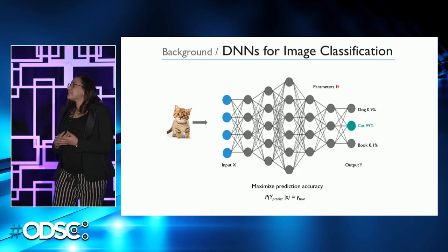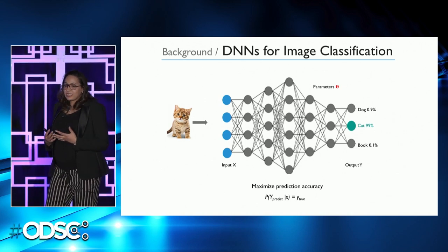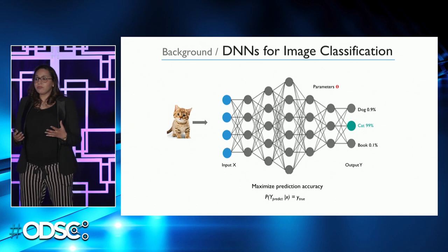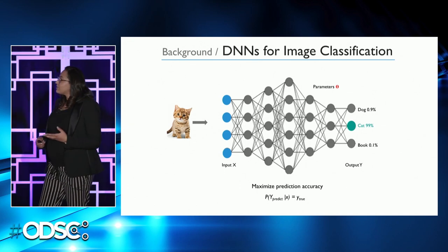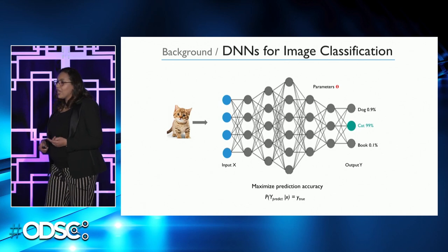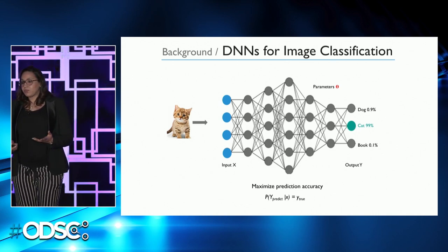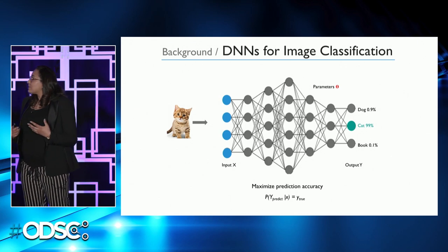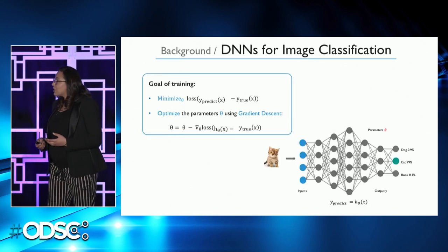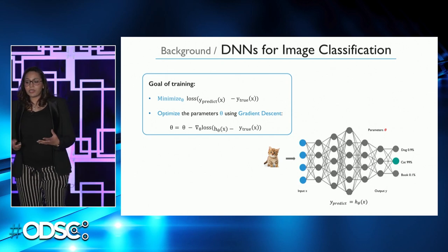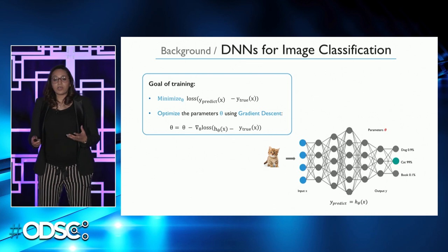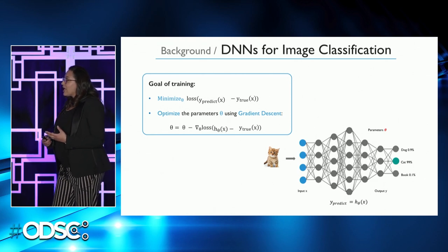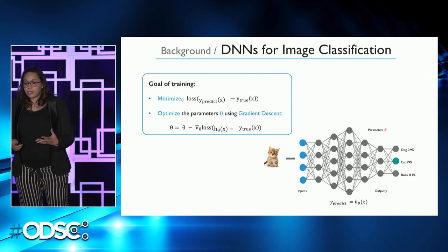Before I dive deep into how we can generate these adversarial examples, let's refresh our minds and see what the pipeline of a typical image classification task looks like. We train a deep neural network to take as input an image and provide as output a class label with some probability. We train the deep neural network to maximize prediction accuracy. At each iteration of the training process, we use the gradient descent algorithm to update the parameters of the model in order to minimize the loss between the predicted label and the true label, and we do this for many iterations until we reach high accuracy.